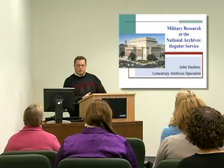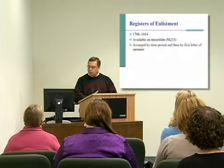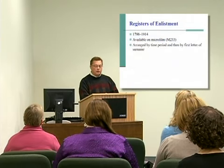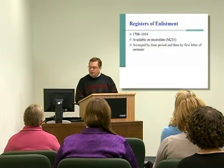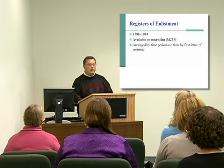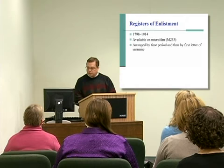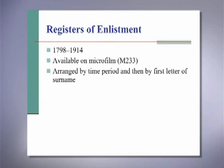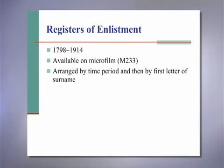To document the service in the regular army, the department did keep a specific set of records called the registers of enlistment. What we have available documents service in the regular army from 1798 to 1914, just prior to the beginning of World War I. The registers of enlistment are available in textual form and also on microfilm in National Archives publication M-233. They're arranged by time period, then by the first letter of the initial surname, and then by date of enlistment.